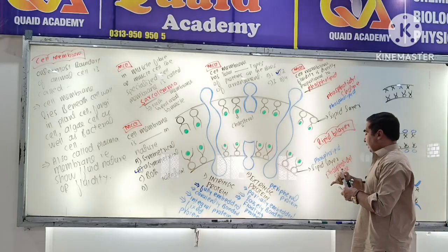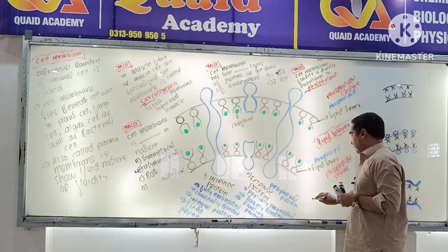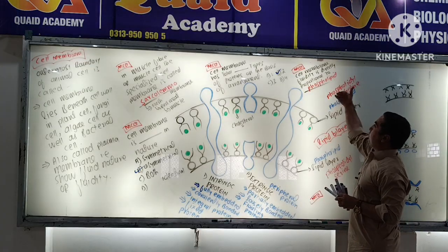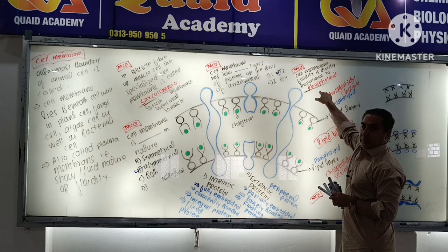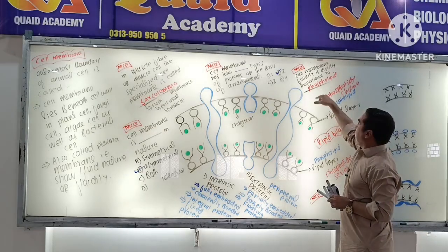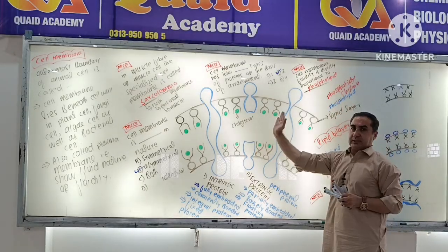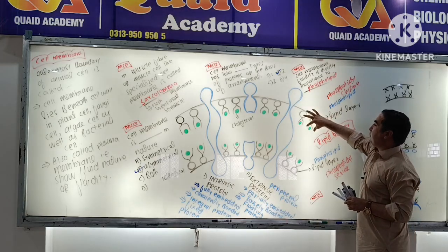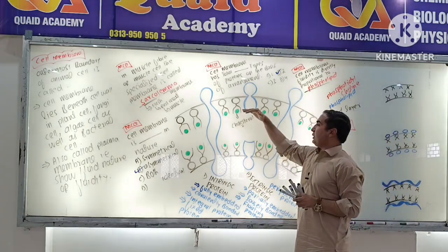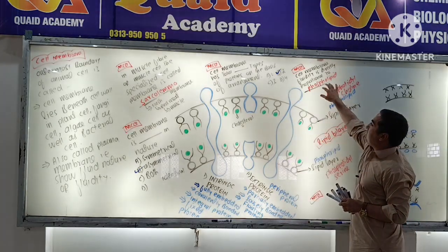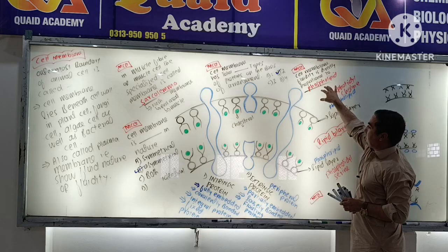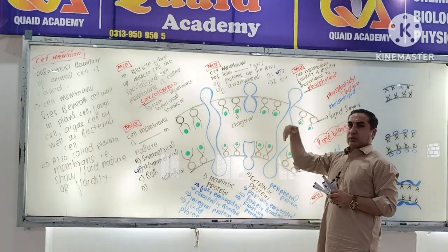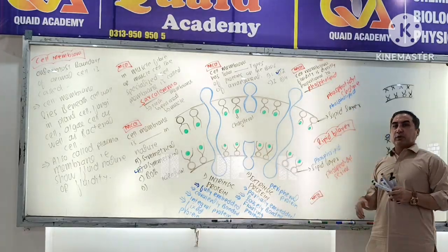This is directly related to the MCQ: membrane fluidity is directly proportional to the number of phospholipids, because their non-polar tails give the membrane its fluidity.